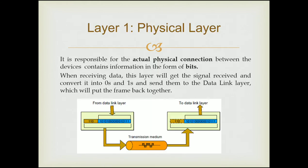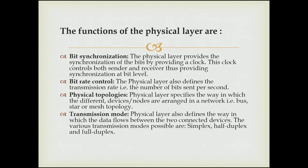The first layer is the Physical layer. It is responsible for the actual physical connection between the devices and contains information in the form of bits. When receiving data, this layer gets the signal received, converts it into zeros and ones, and sends them to the Data Link layer, which puts the frame back together. The functions of the Physical layer are: bit synchronization, bit rate control, physical topologies, and transmission mode. Bit synchronization: the Physical layer provides synchronization of bits by providing a clock that controls both sender and receiver, providing synchronization at bit level.